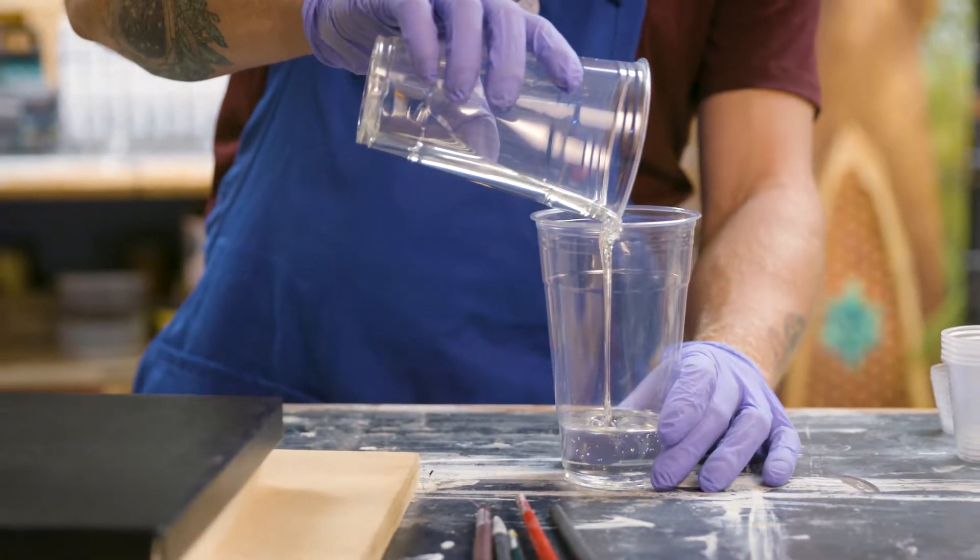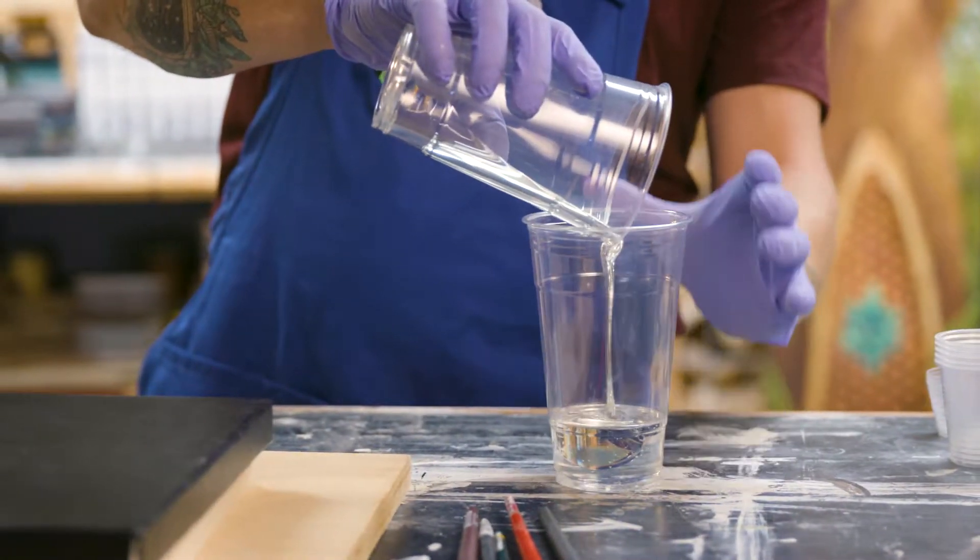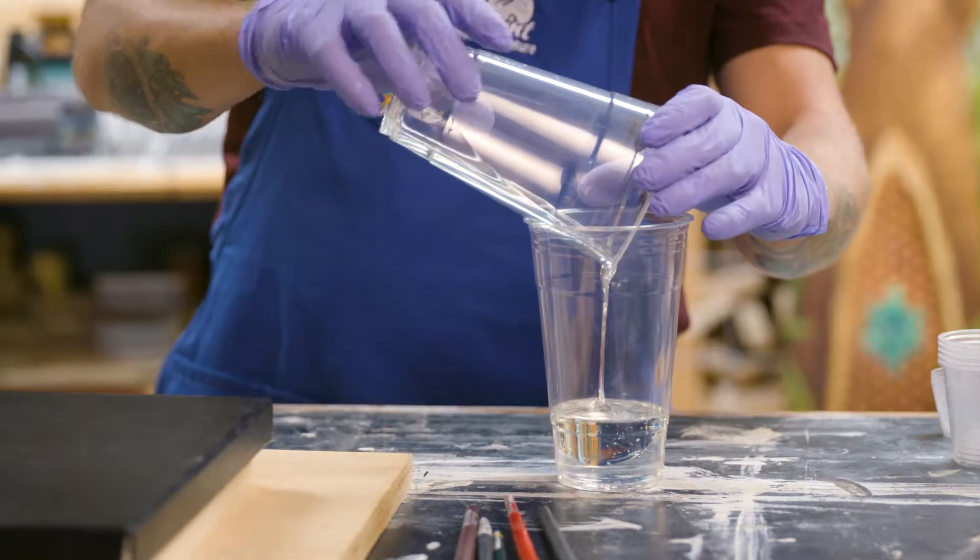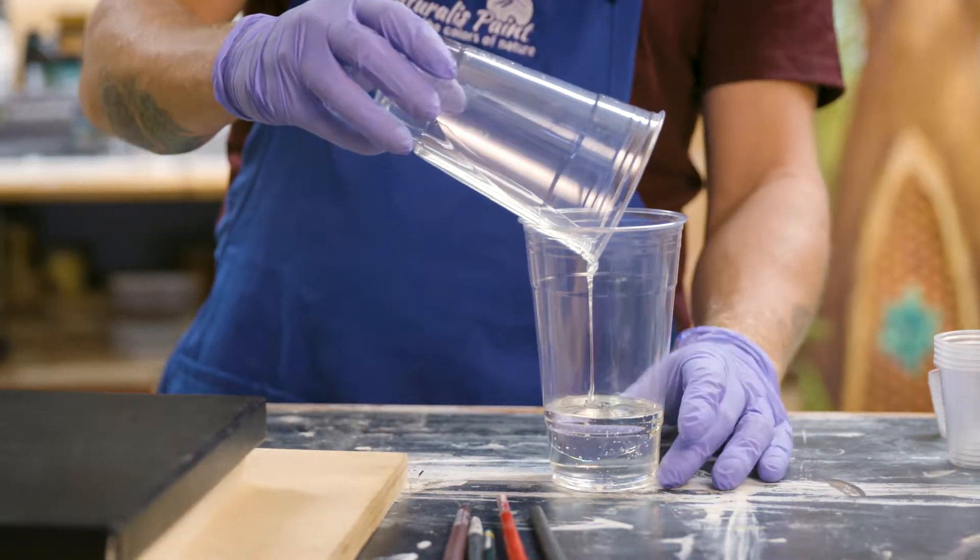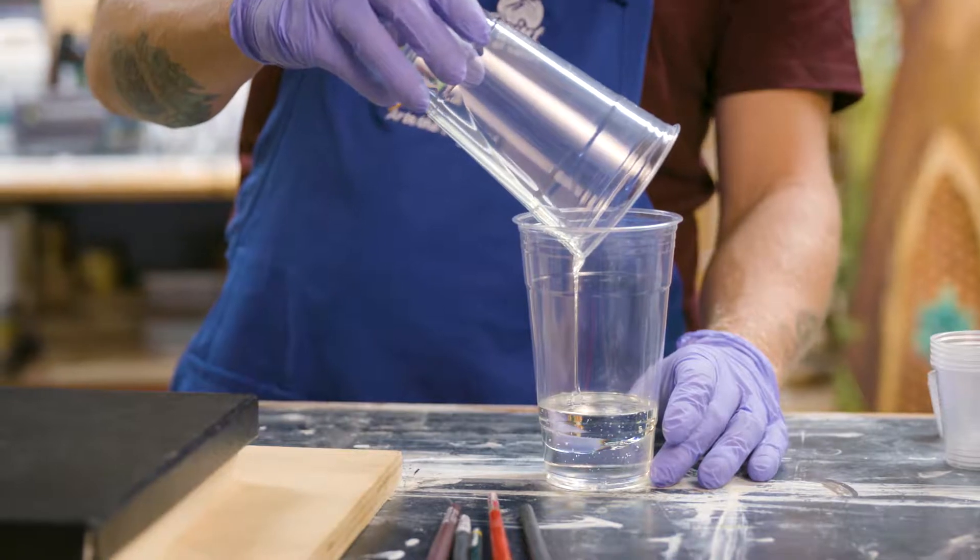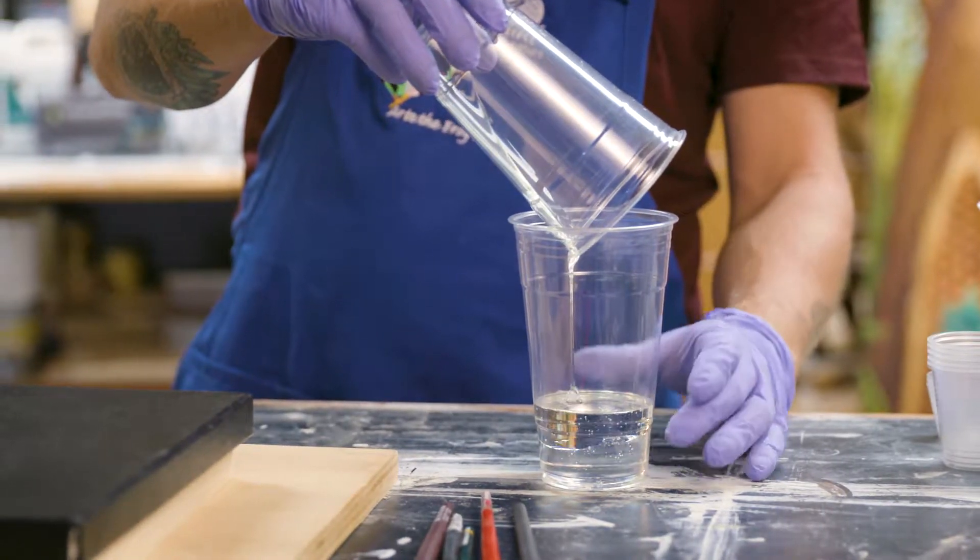Our resins are chemically very similar to a glue-like material when mixed. Like many household chemicals such as bleaches, cleaners, paints and glues, they are all chemically based and need to be handled with care accordingly.